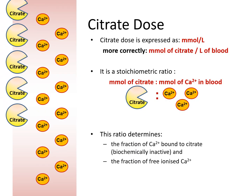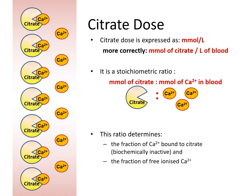Citrate dose is expressed as millimoles per liter, but more correctly, it should be expressed as millimoles of citrate per liter of blood. It is a stoichiometric ratio — a ratio of the millimoles of citrate to the millimoles of calcium in blood. This ratio determines the fraction of calcium which is bound to citrate, and therefore biochemically inactive, and the fraction of free ionized calcium.